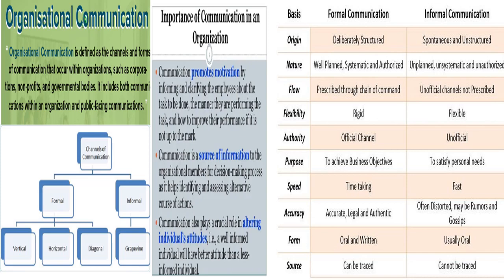Horizontal communication means communication between people who belong to the same hierarchy. For example, if the HR manager and the marketing manager have a communication channel, that is horizontal communication. Diagonal communication exists between people who belong to different hierarchies as well as different functional areas. For example, a marketing executive of the marketing department having communication with the HR manager of the HR department — that is diagonal communication.